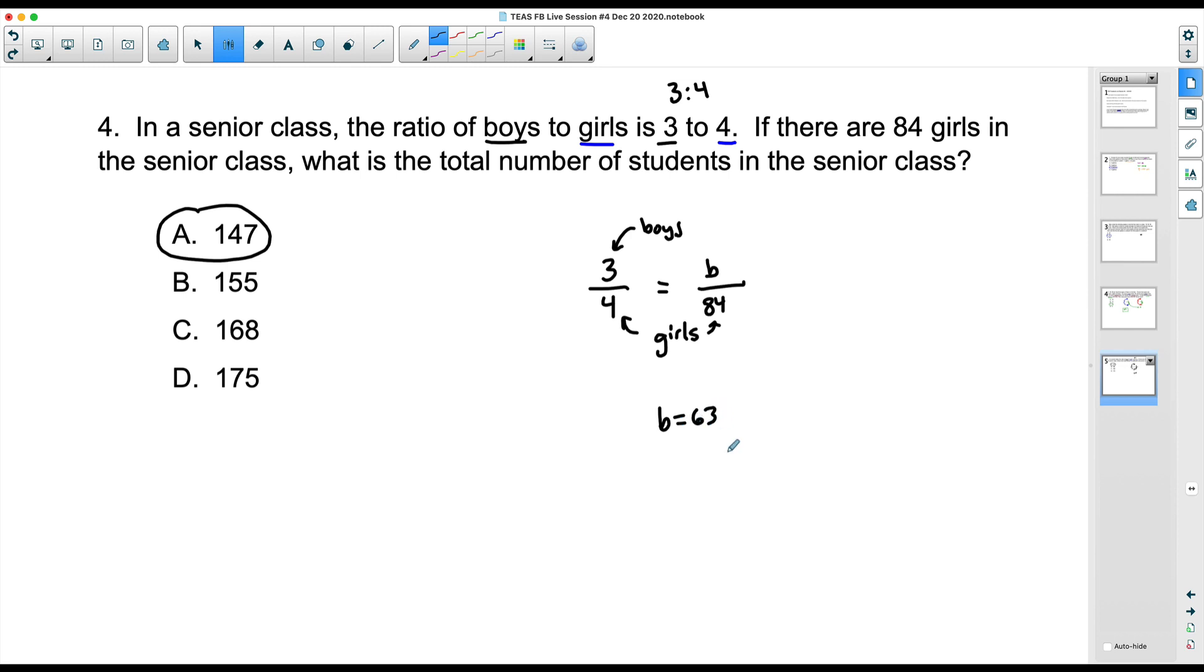Now, had that been an answer choice, some of you may have picked it, and that's because you didn't read the question to see what it was really asking. The question says, what is the total number of students in the senior class? Well, we already know we got 84 girls. 84 girls and then the 63 boys. That's the total number of students. So make sure you read this question. Total number of students. If the question did say how many boys are in the class, then yes, you would have said 63. But the total number of students is going to be 147. And yes, that is our final answer.